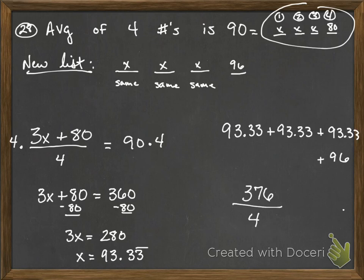We divide that by our total numbers, which is four. That's going to give us that this new average is 94, and that's going to be our final answer.